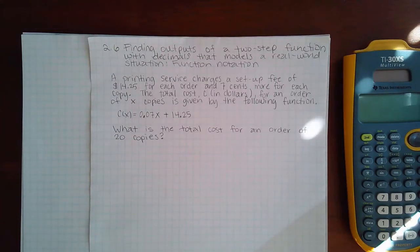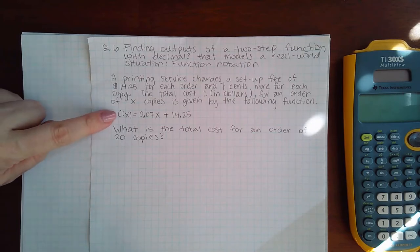Here we have 2.6 finding outputs of a two-step function with decimals that models a real-world situation, using function notation. A printing service charges a setup fee of $14.25 for each order and $0.07 more for each copy. The total cost C in dollars for an order of X copies is given by the following function.